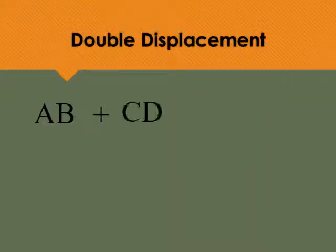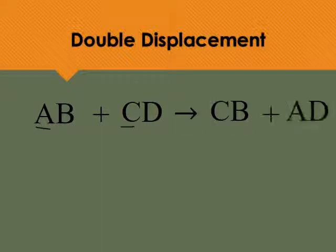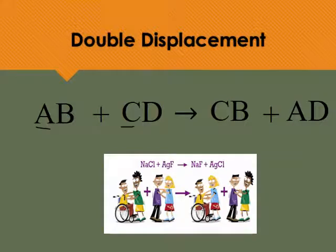Taking a general look at double displacement reactions, we're going to have our two cations switching places. A and C are going to switch places. We're going to make CB and AD. The formulas of CB and AD will depend on the charges of those elements as they cross over.